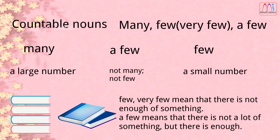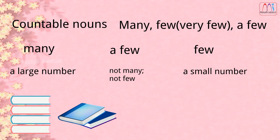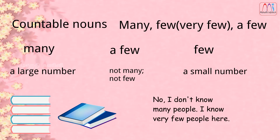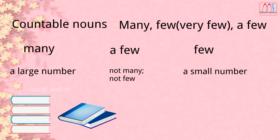A few is a certain number — not many and not few. For example: Do you know many people here? No, I don't know many people. I know very few people here. But I knew a few people in the town where I lived before.